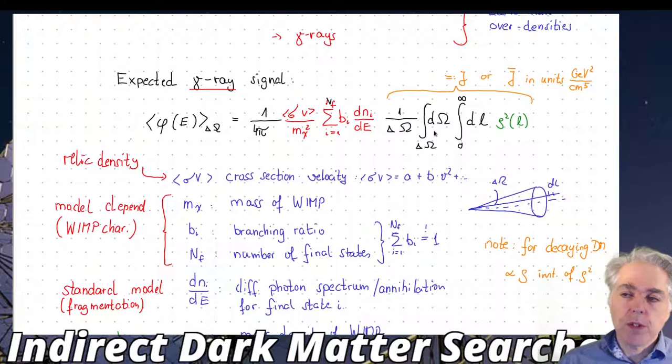Within that solid angle you integrate over the full solid angle to get the total signal and divide by the solid angle. For each line of sight we integrate up the density squared of dark matter along that line of sight integral. L is the path along which we integrate and dL would be the position from L to L plus dL.